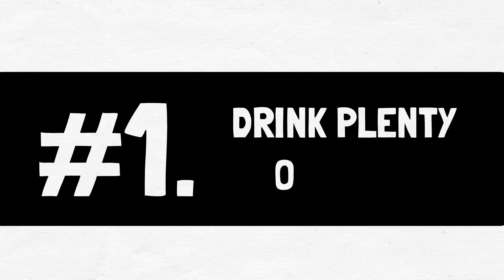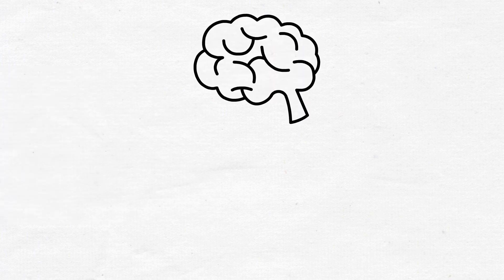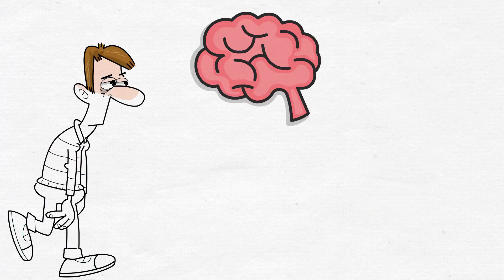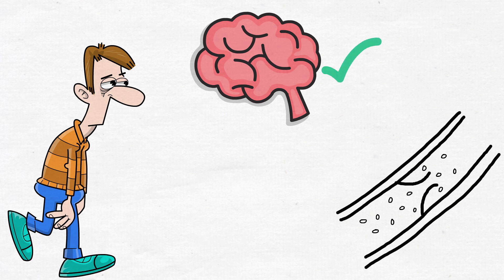1. Drink Plenty of Water. The human brain is 75% water. In case of any decrease in water levels in the brain, it might affect one's mood, mental clarity, and energy.